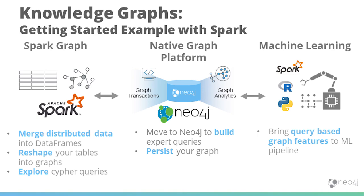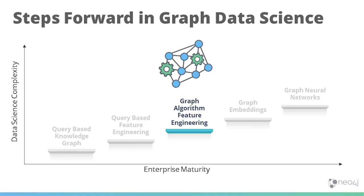The limitation of query-based feature engineering is you need to know what you're after — no one is coming up with new ideas. So the next chunk is graph algorithm feature engineering, which is unsupervised instead. If you want to do this, you start in Spark to bring data together, create your relevant subgraph, push it into Neo4j, and that's where you're building queries of how many hops between A and B, how to weight them, and how to aggregate that information to produce a metric for your machine learning model.